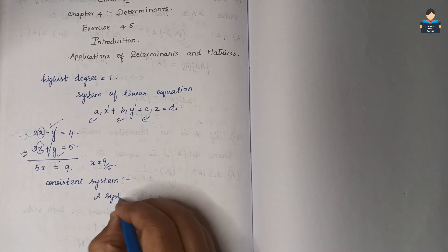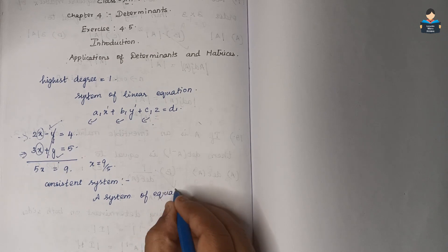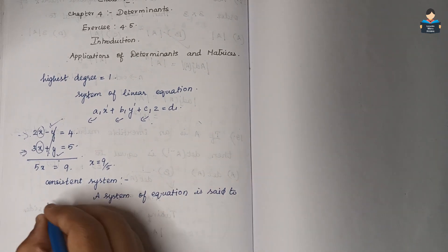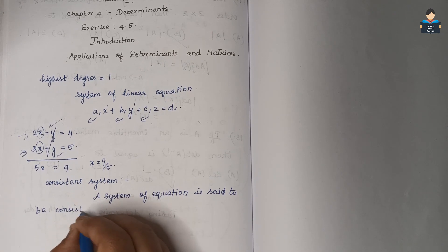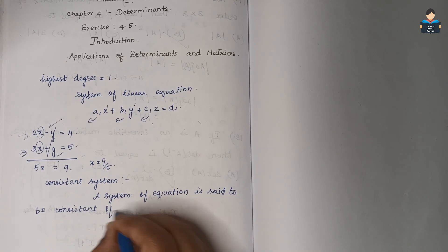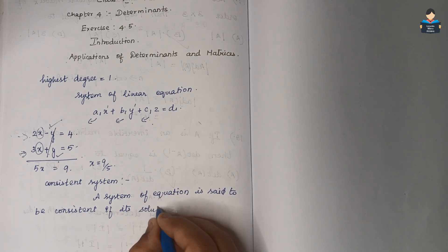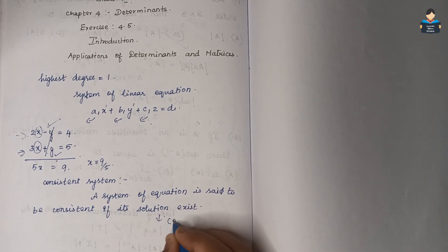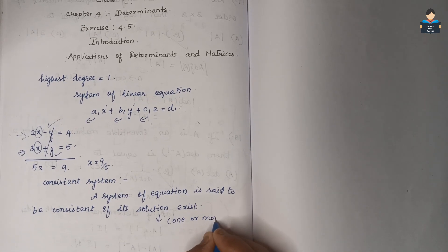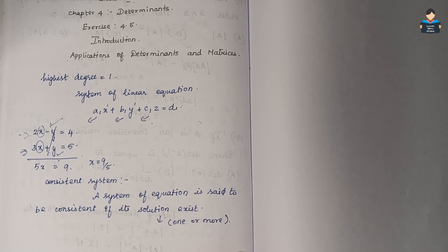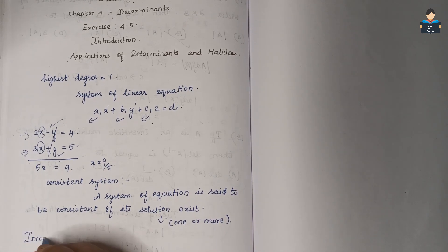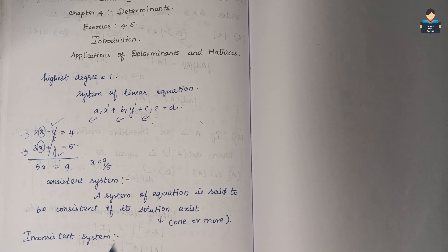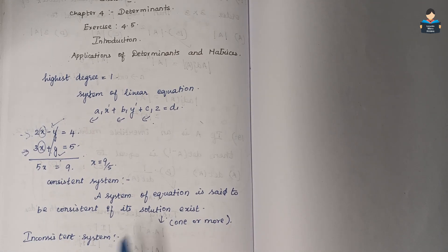A system of equations is said to be consistent if its solution exists. The solution can be one solution or more than one solution. On the other hand, a system of equations is said to be inconsistent if its solution does not exist.